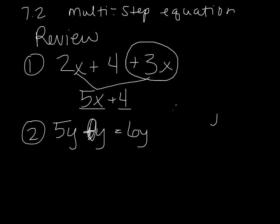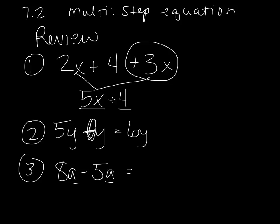Let's try more review problems. Number three: 8a minus 5a. Because they both have an a and it's not squared, we can combine them — it's called combining like terms. 8 minus 5 is 3, so the answer is 3a. Not 3a squared, just 3a's. If I had 8a's and took away 5a's, I'd be left with 3a's.